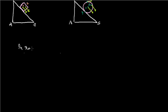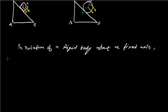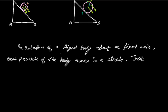So we can conclude that in rotation of a rigid body about a fixed axis, each particle of the body moves in a circle, that fixed axis passes through the center of the rigid body.